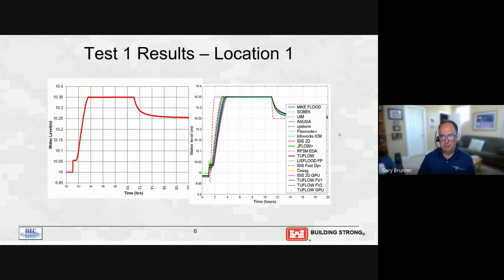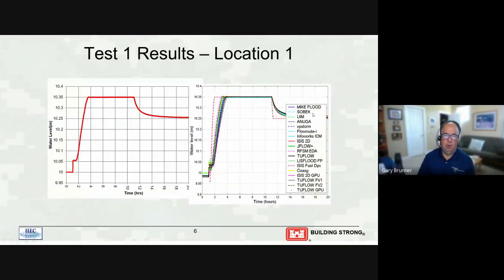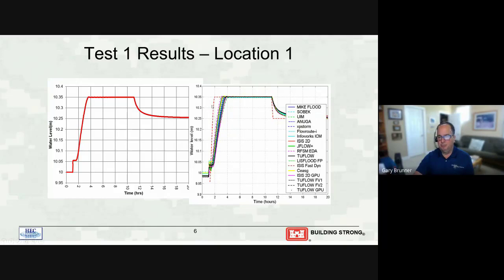There are two test point locations — point one and point two — where we look at hydrographs. The RAS result is always shown on the left, and the other models are on the right. I couldn't get the numerical results of their models, so I can only take the graphic out of the report, but I tried to size the graphic on the left to the exact same dimensions so it lined up correctly. You can see there was some spread in the models — some of these are very simplistic models, like this red dashed one.